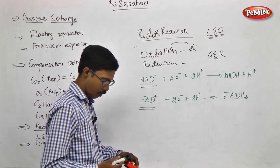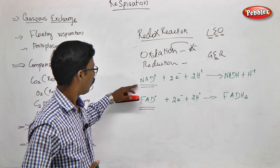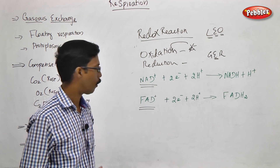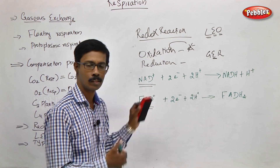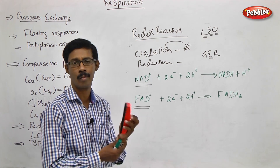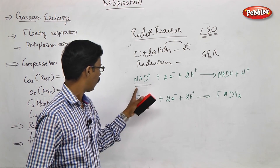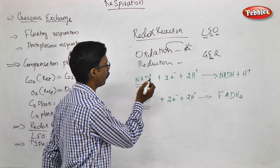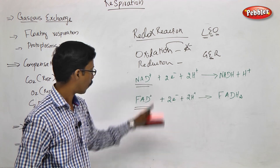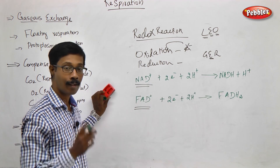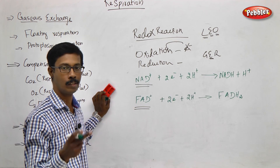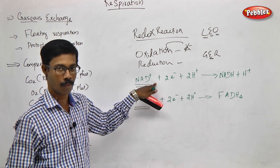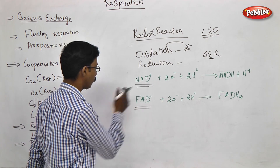For example, the substrate — Nicotinamide Adenine Dinucleotide (NAD) and Flavin Adenine Dinucleotide (FAD). These are two structures. One structure is the oxidation form. The oxidized form carries a positive charge — NAD+, with electrons and protons in a net positive state.